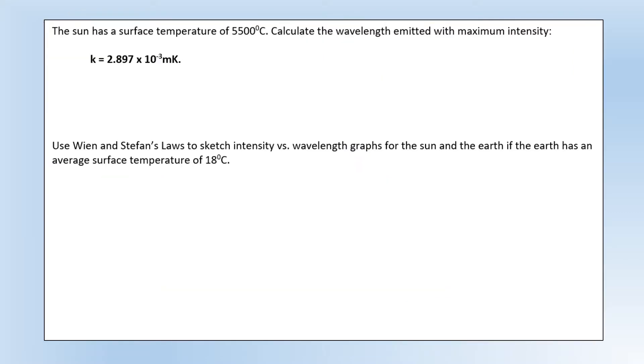Okay, so the sun has a surface temperature of 5500 degrees centigrade. Calculate the wavelength emitted with maximum intensity and we've been given Wien's constant there. So what we can do is use the equation. Wien's displacement law says the maximum intensity wavelength and the temperature are inversely proportional if the temperature is measured in Kelvin. So we can plug the numbers in and we can see that the maximum wavelength is 5.01 times 10 to the minus 7 meters or 501 nanometers, which would be sort of an orangey yellowy maybe even slightly green part of the visible spectrum.